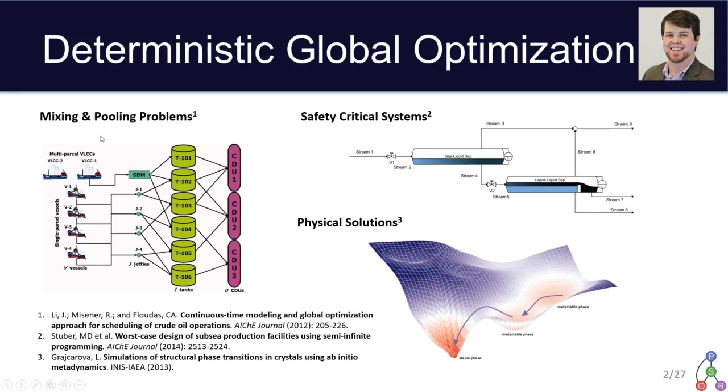This approach is particularly useful for many distinct classes of problems. So, we have the traditional non-convex formulations such as the mixing and pooling problem. We may have a large number of non-convex equality constraints which results in there being many local optima, and by operating this mixing and pooling operation at a global solution, you can achieve some particular economic benefits that may be quite substantial compared to using a local solution for this problem.